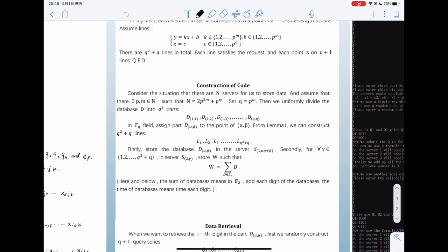And each part is corresponding to a point on the coordinate system. Then we can draw q^2 plus q lines. And each two points are on the same line.